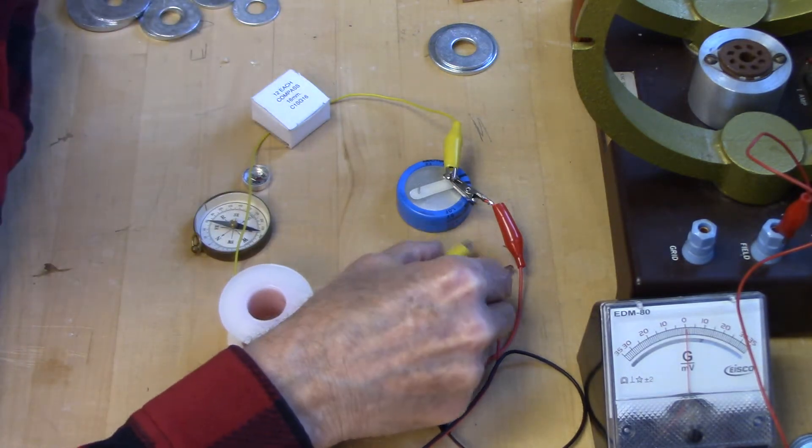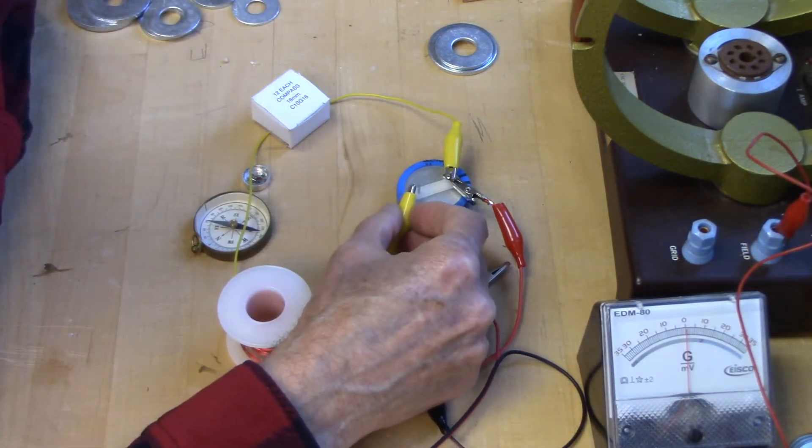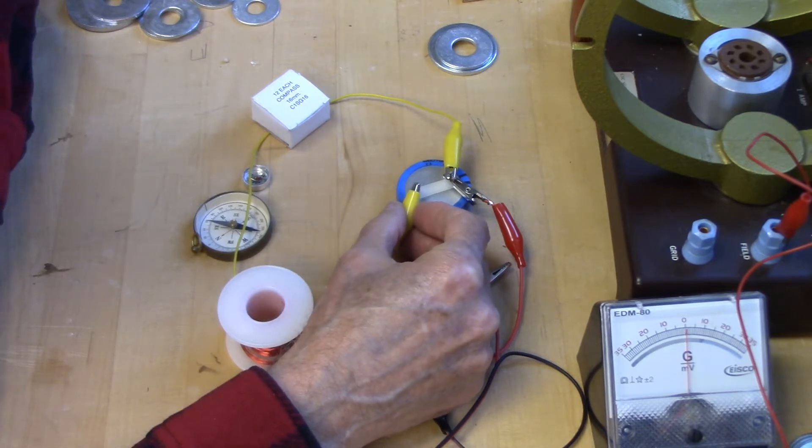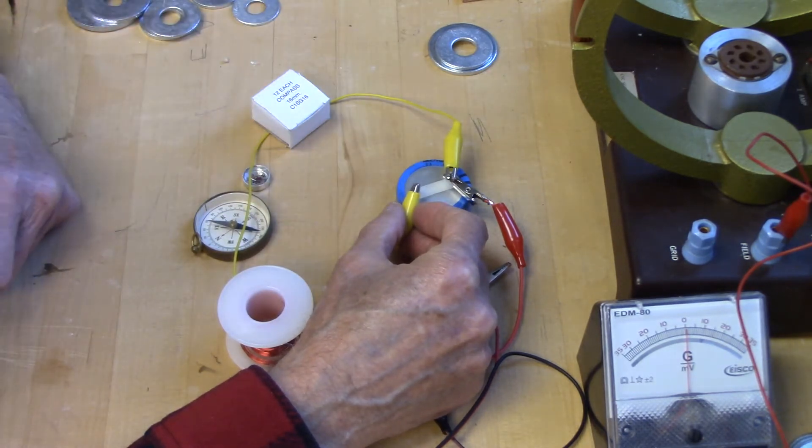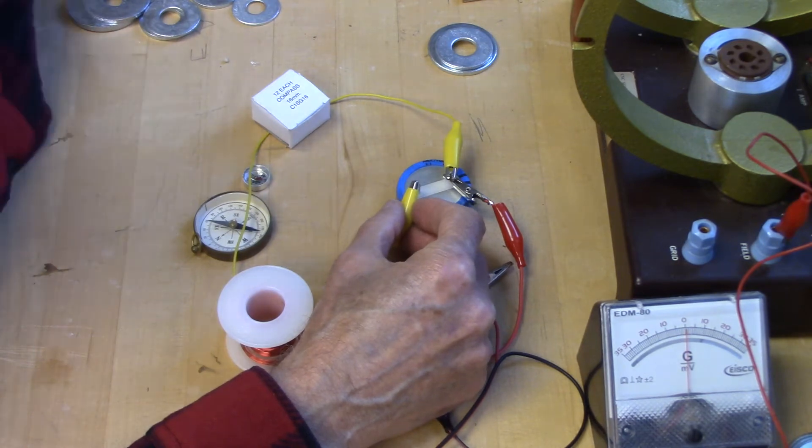Okay, the capacitor's been charged probably up to maybe 4, 5, 6 volts, and we're going to allow it to discharge through this wire. We're going to observe what happens to the compasses.